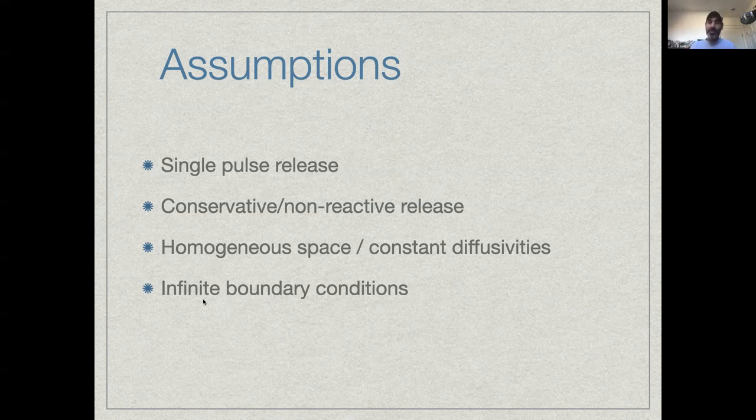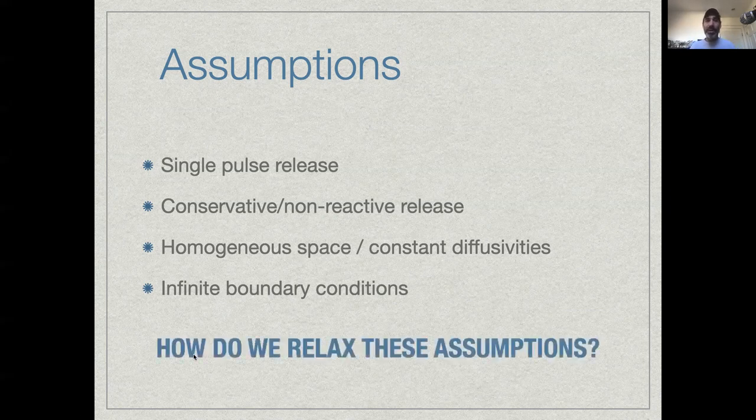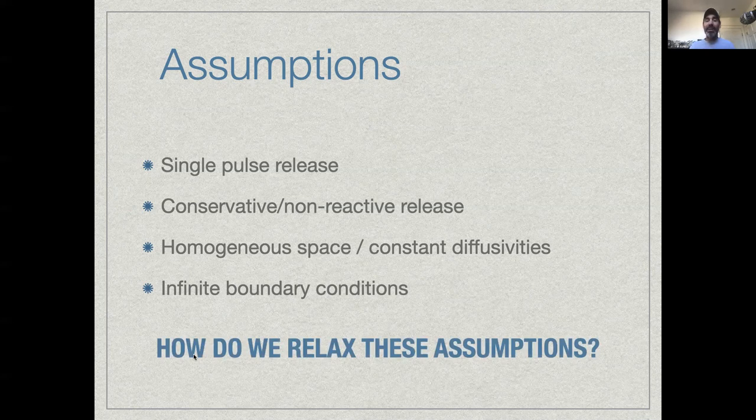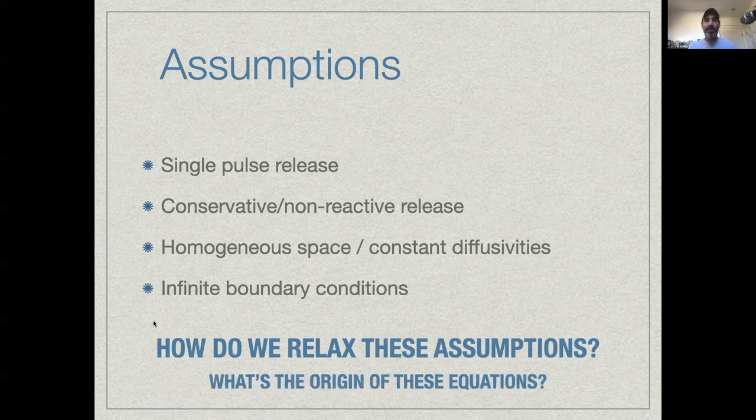So really, those sets of assumptions allow us to get an analytical solution, but they end up with a problem that's not particularly useful for real-world problems. So what I'm going to ask next, and what we'll dive into the next unit, is the question of how do we relax these assumptions? How do we take this concept of diffusion and get to a place where we can use this model in a more flexible way and relax assumptions so that we can make more realistic predictions? And also, what's the origin of these equations? Where did that analytical solution come from to help us understand what the actual process is? Thanks. I'll pick that up in the next video.